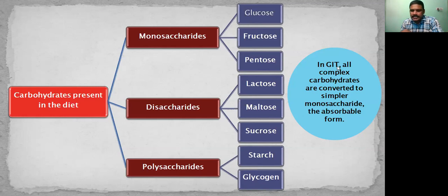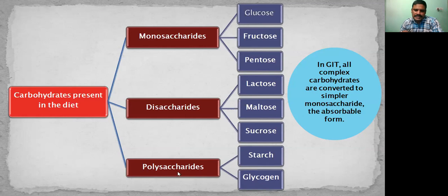In the GIT (gastrointestinal tract), all complex carbohydrates — polysaccharides and disaccharides — are converted into simpler molecules called monosaccharides, which are the absorbable forms of carbohydrates. Our body can absorb only monosaccharides, not disaccharides or polysaccharides. So disaccharides, polysaccharides and oligosaccharides will all be converted into simpler monosaccharides so that our body can absorb them.